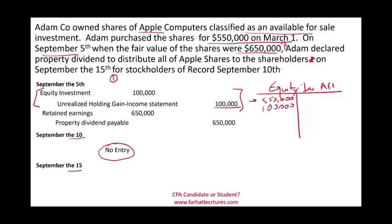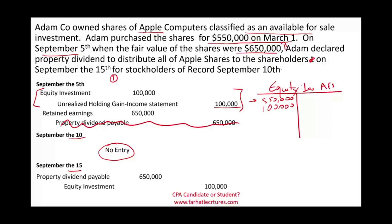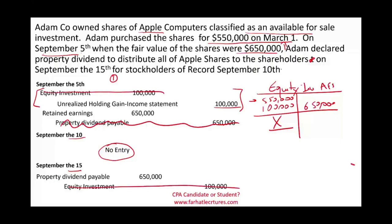On September 15th we distribute — not cash, but the Apple shares — to our shareholders. We debit the property dividend payable (removing the liability we created) and credit the equity investment $650,000. As a result, the investment goes down to zero — the investment is gone, and the property dividend payable is gone. What remains is the unrealized holding gain or loss on the income statement, which gets closed eventually to retained earnings.